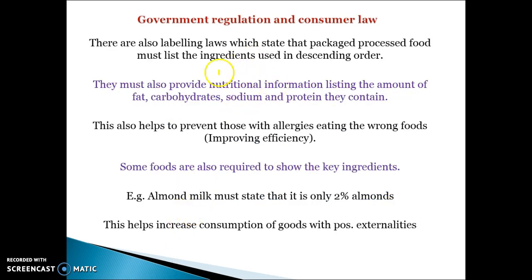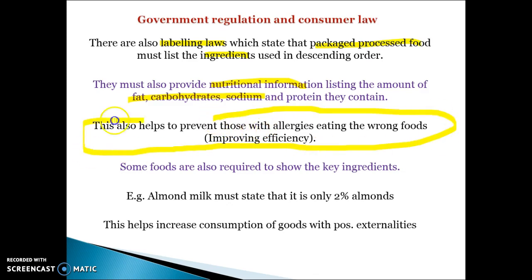Consumer regulation includes labelling laws, which give you more information from packaged food about their ingredients — how much fat, carbohydrates, protein, sugar, and salt. They also prevent people with allergies from eating the wrong food, which is a key example of adverse selection. If you have anaphylaxis and buy a product containing nuts, that's asymmetric information causing your living standards to go down. Sometimes foods must show key ingredients — for example, almond milk must state it's only 2% almonds, and fruit drinks must state the percentage of fruit, so you're not buying things you think are better quality than they actually are.